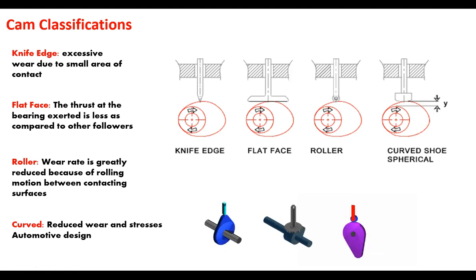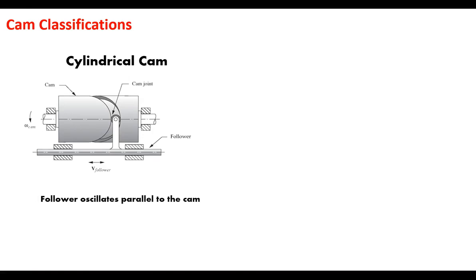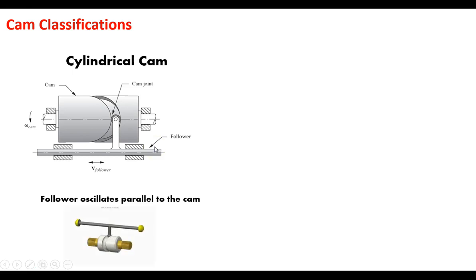Another thing to look at is how the cam itself is designed. Beyond basic lobed cams, there is the cylindrical cam — literally a cylinder with a groove that allows the follower to travel within, as opposed to riding over a lobe and base circle. What you gain from that is a specific type of linear motion that goes parallel to the axis of rotation of the cam itself, so the follower oscillates parallel to the cam.